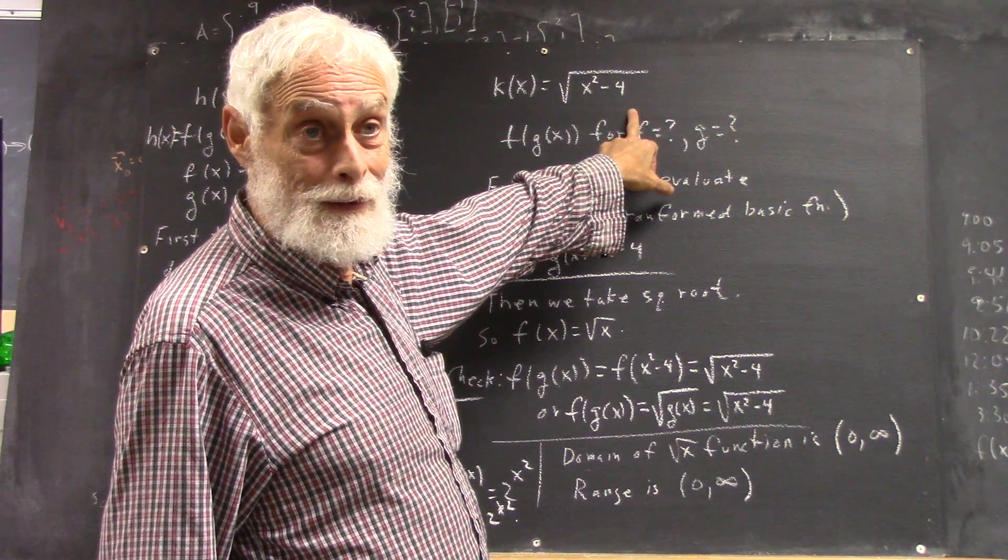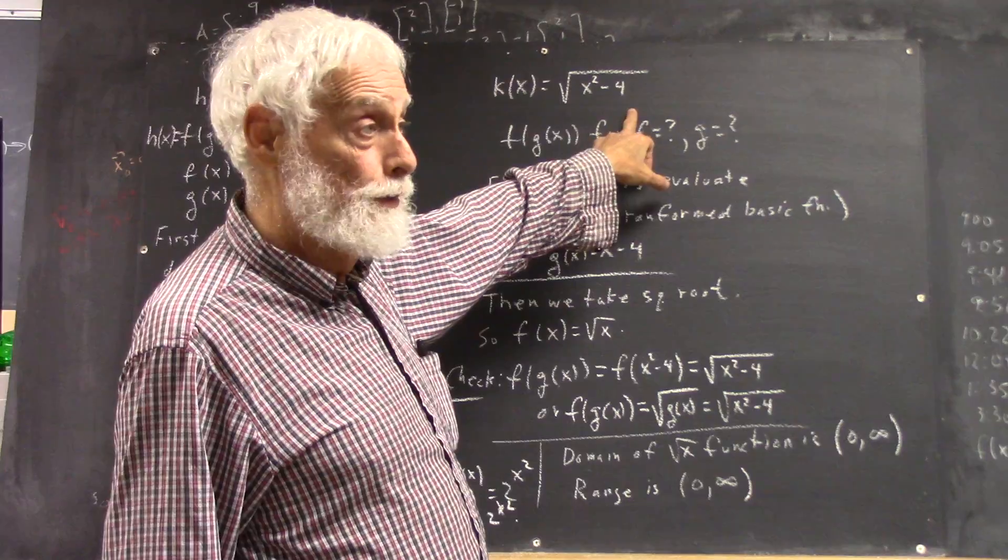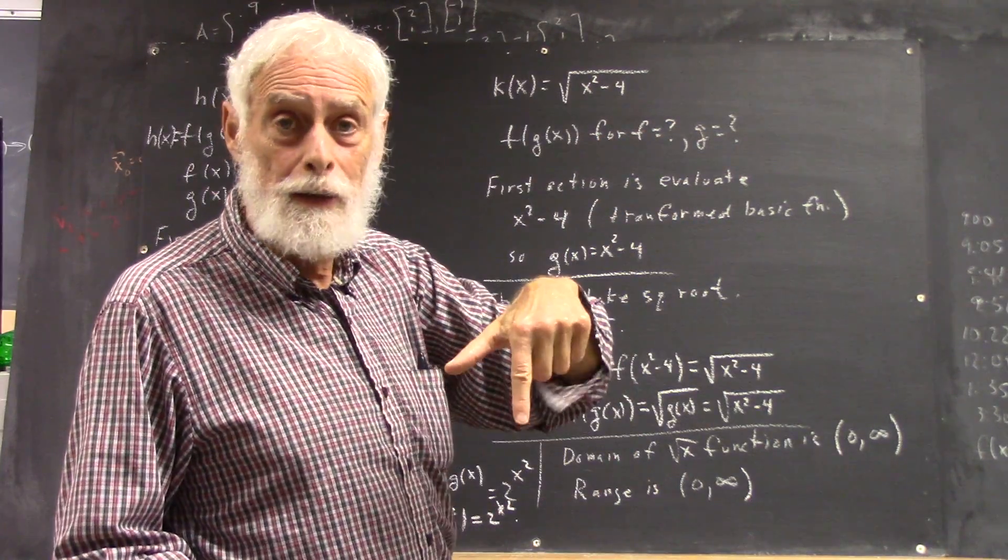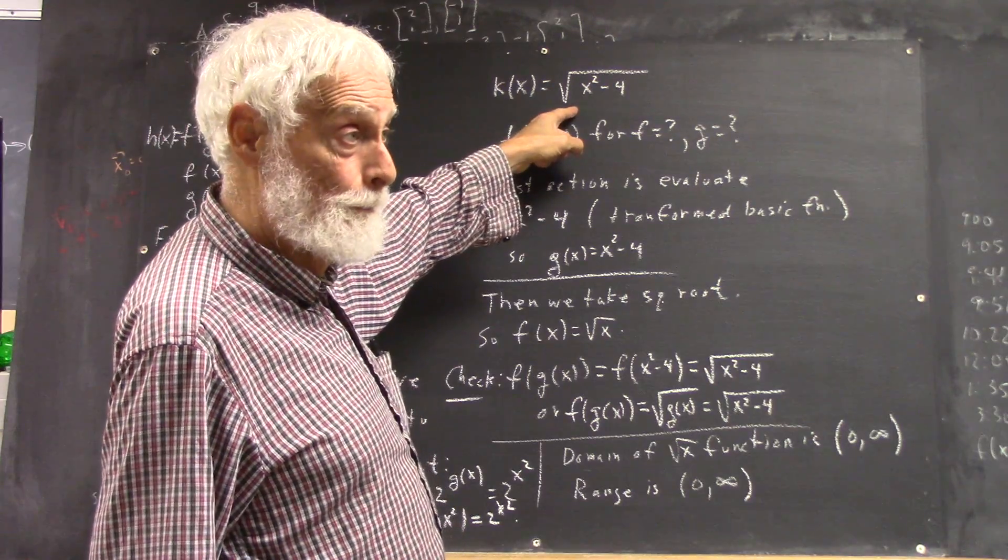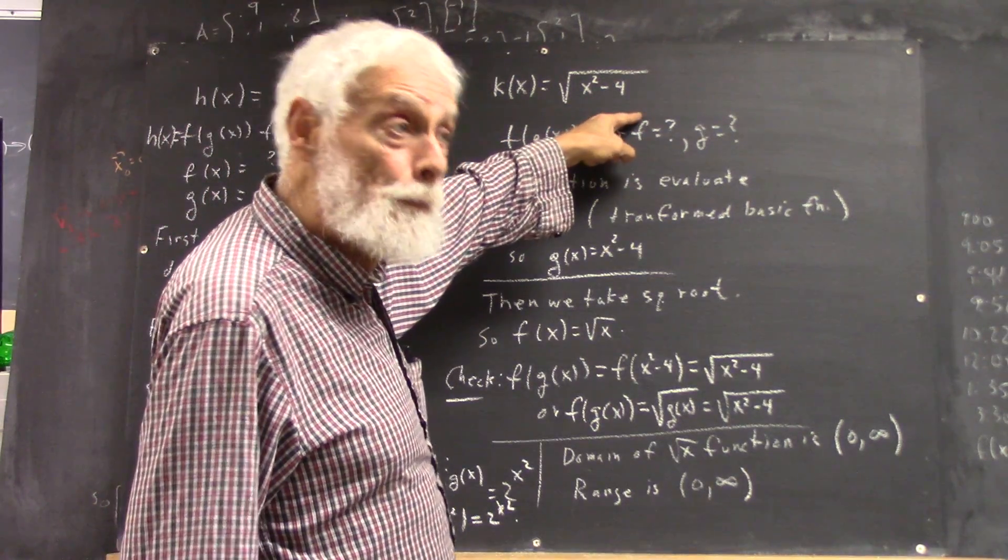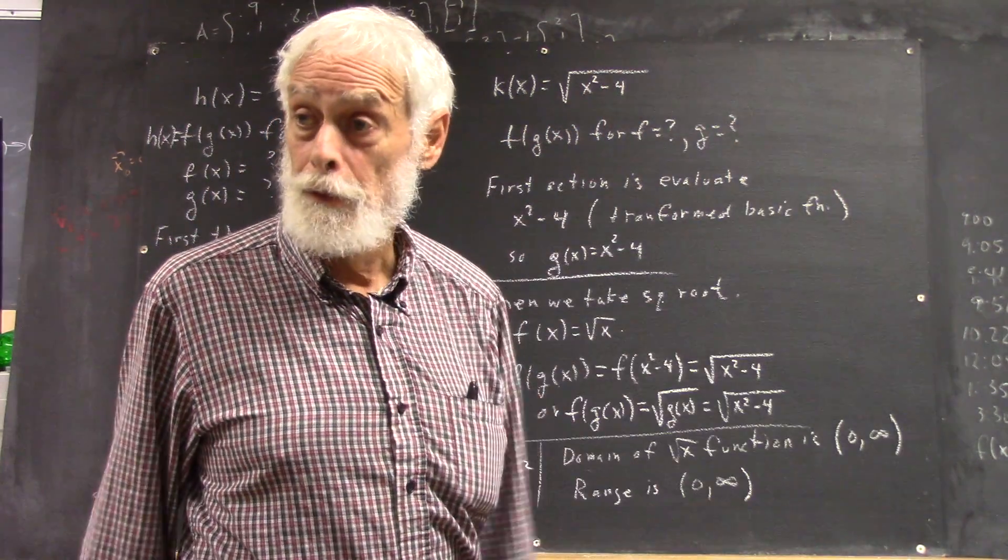Any other integers? Well, there aren't any other integers. The next integer going on in the negatives is negative 2. But negative 2 works just fine. Now it gives you 0, but we can take the square root of 0.